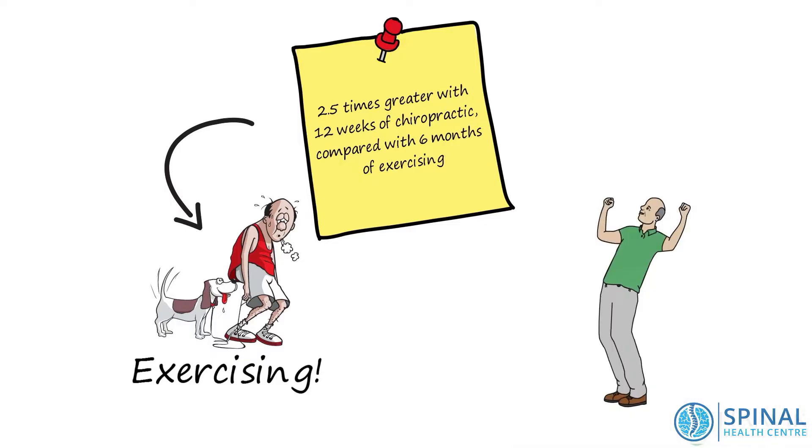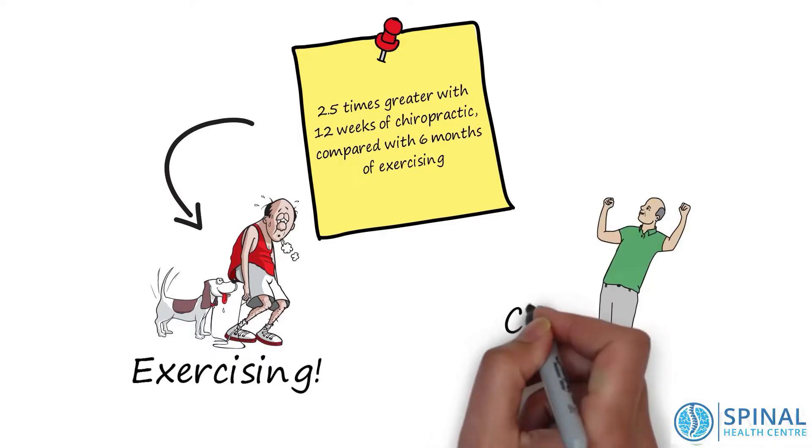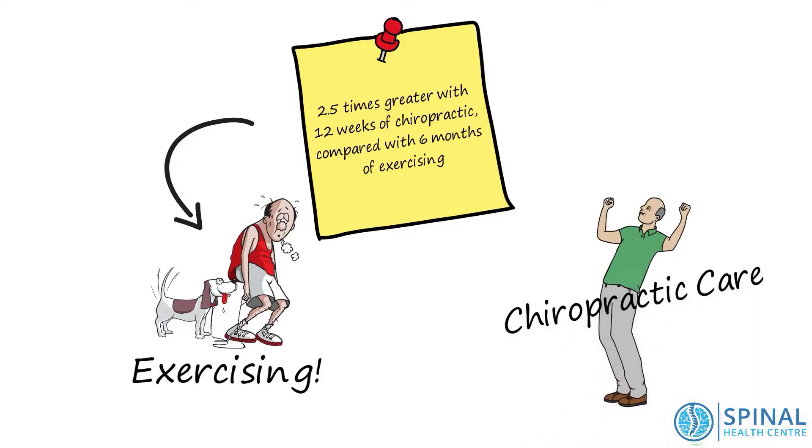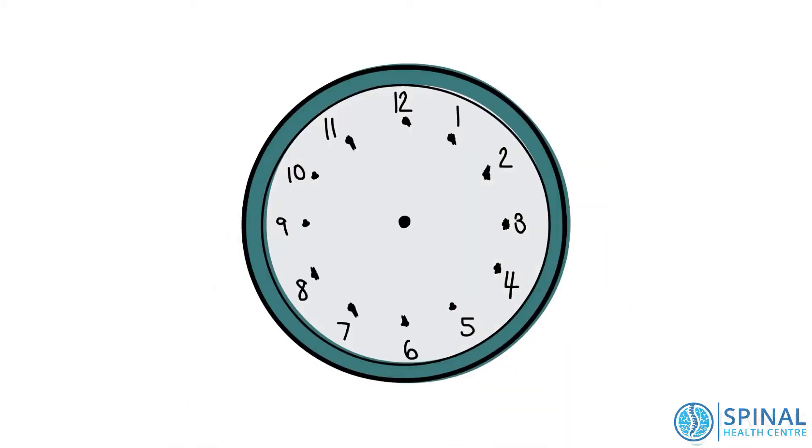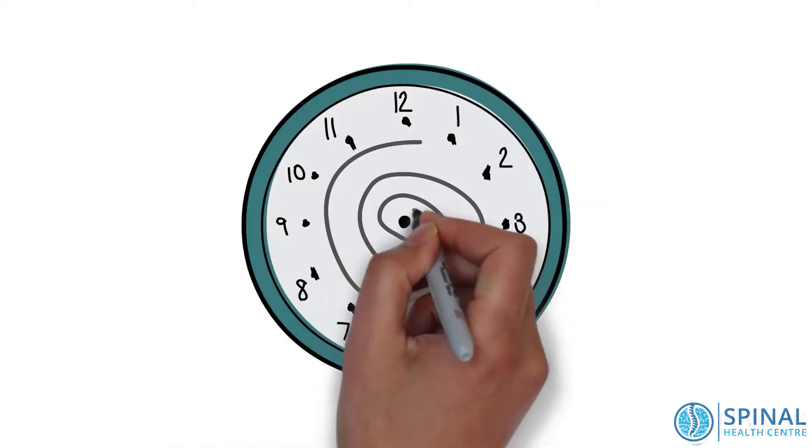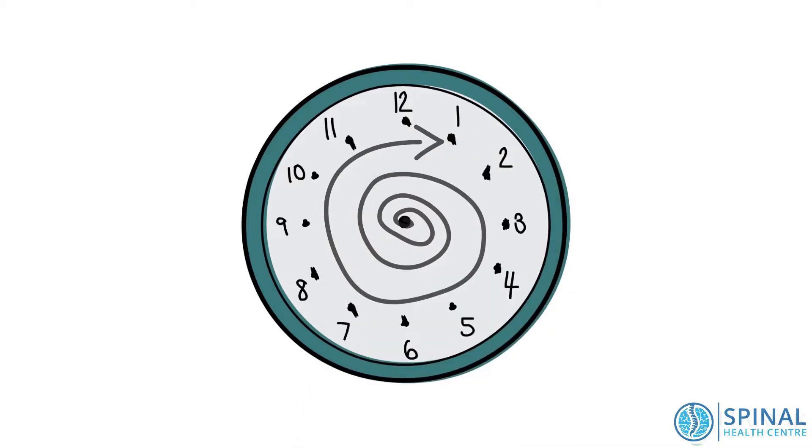It's important to note that for the changes to take place, it took more than four weeks of chiropractic care. This suggests that chiropractic care has a cumulative effect, and it can take time for some nervous system changes to take place when you or your family start under care.